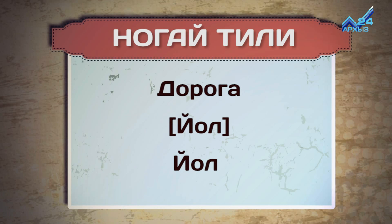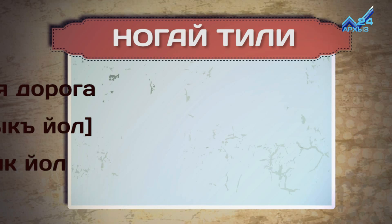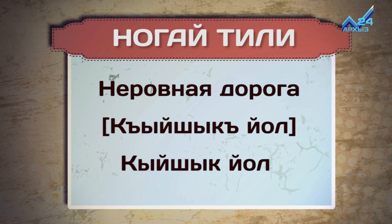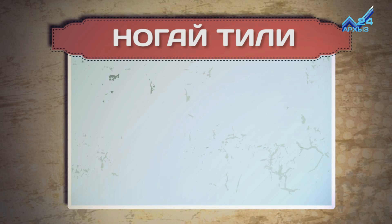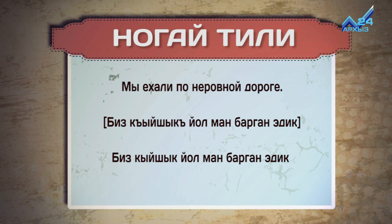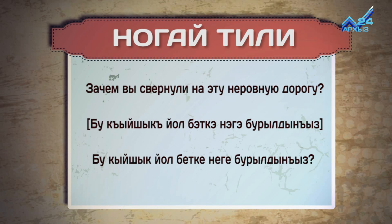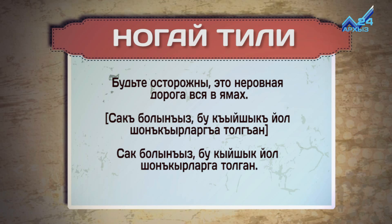Дарога — Ёл. Неровная дорога — Қишык ел. Мы ехали по неровной дороге. Біз қишық ел ман барған эдік. Зачем вы свернули на эту неровную дорогу? Бүй шық ел беткен е бұрылдыңыз? (Road — Ёл. Bumpy road — Қишык ел. We traveled along the bumpy road. Why did you turn onto this bumpy road?)